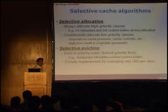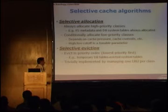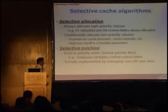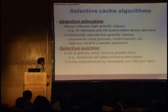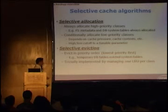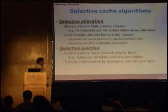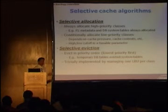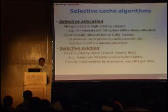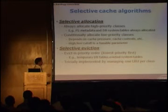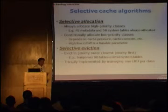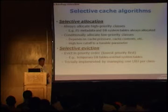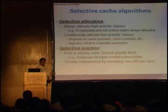The second algorithm is selective eviction. Once data is in the cache and we need to make room, instead of plain LRU or LFU, we evict in priority order — lowest priority first. For example, temporary database tables evict before system tables. The storage system doesn't need to know the semantic difference — it just sees the priority. This can be trivially implemented in existing storage systems: instead of one big LRU list, maintain an LRU list for each priority class. The controller picks the lowest-priority LRU list and starts evicting. When that's exhausted, it moves to the next. So large sequential data, if admitted, evicts itself over time instead of displacing high-priority small files and metadata.